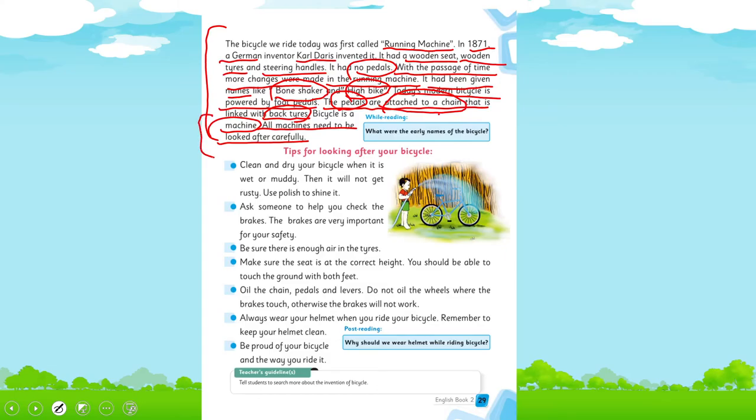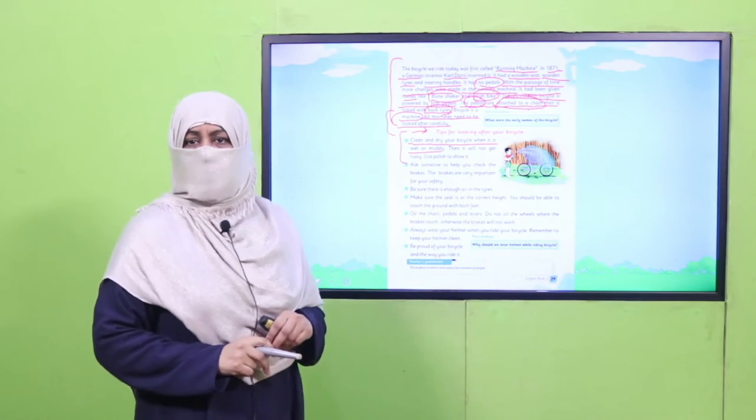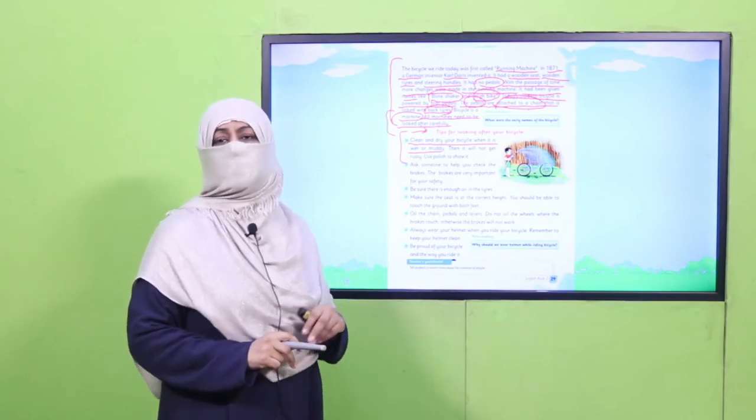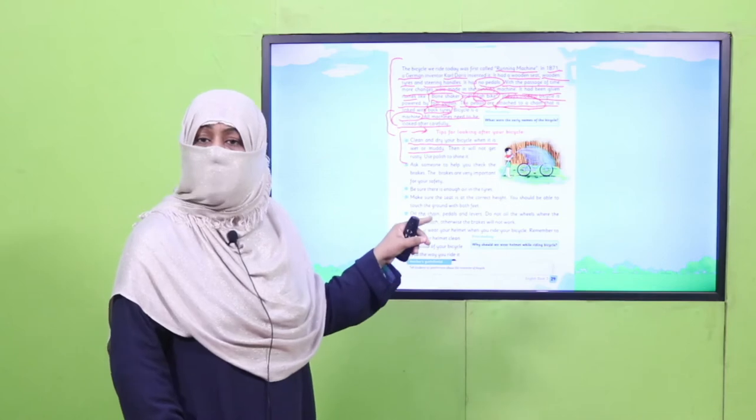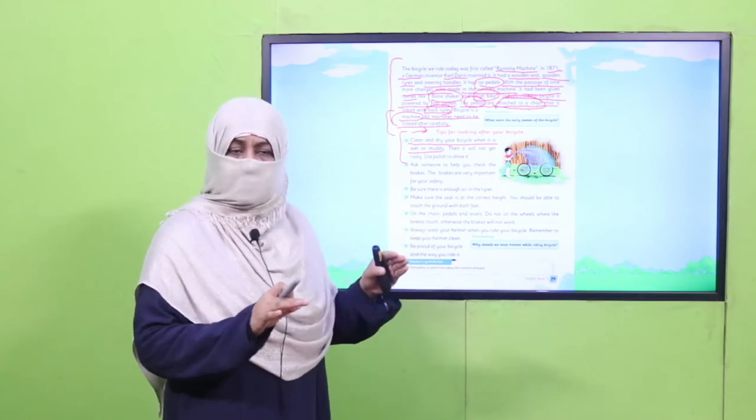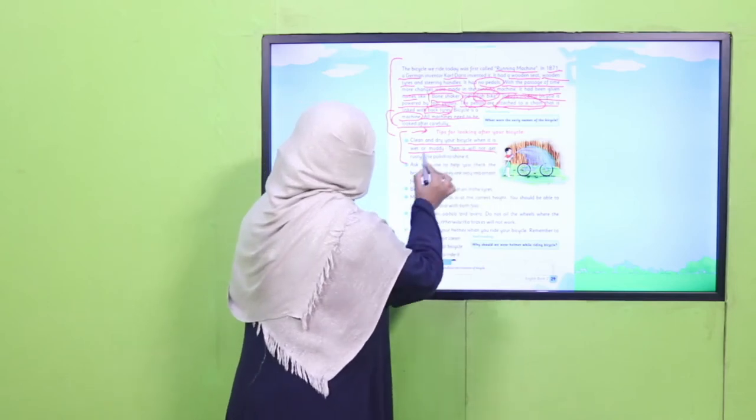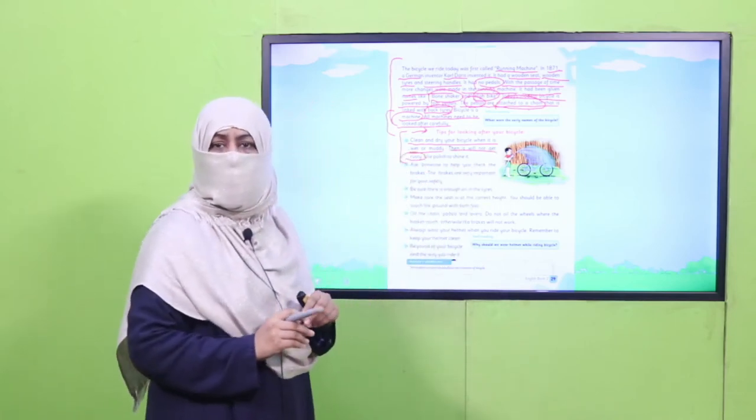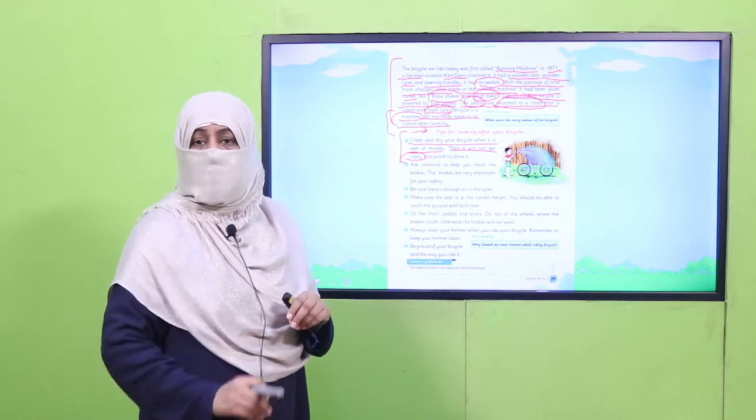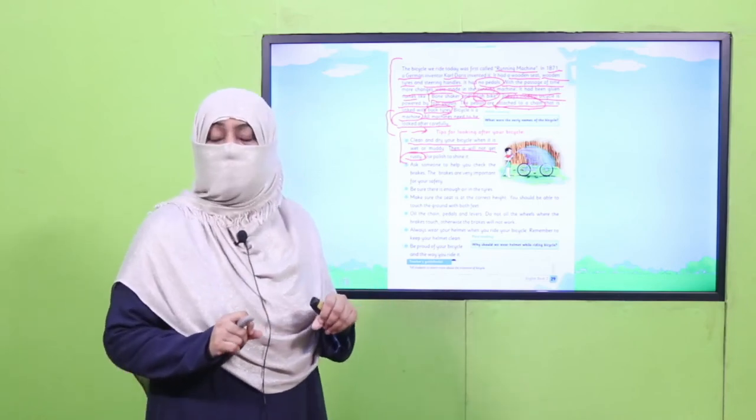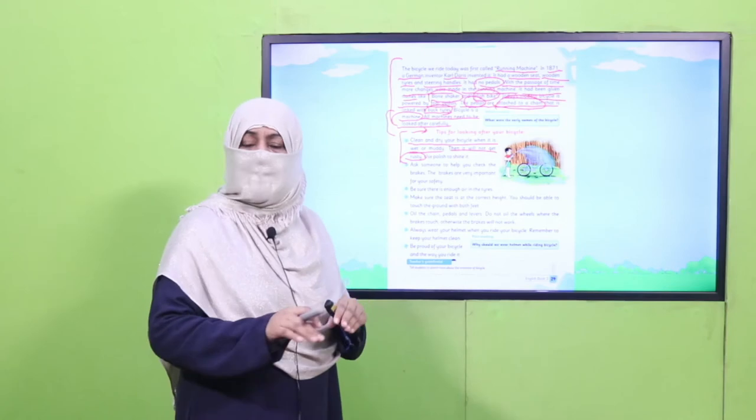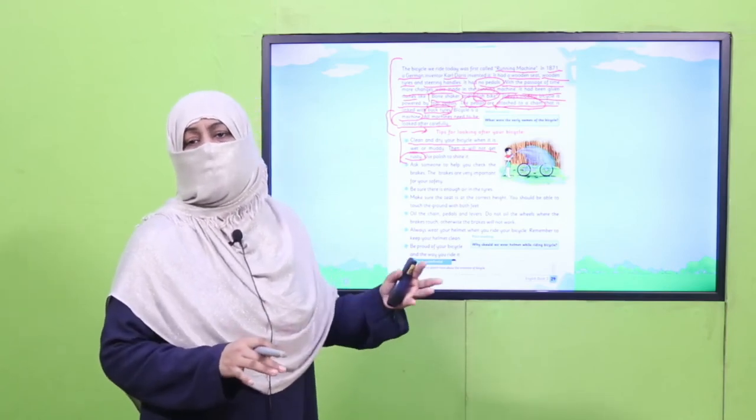Here we are specifically mentioning about your bicycle. How do you keep your bicycle safe? Here we have to tell you the tips. Clean and dry your bicycle when it is wet or muddy. If your bicycle is wet or has anything on it, then it should be dried. Why? Then it will not get rusty. That's why I have seen that children are very careless. If they don't dry it, they don't polish it. If you don't polish it, then the bicycle gets bad.